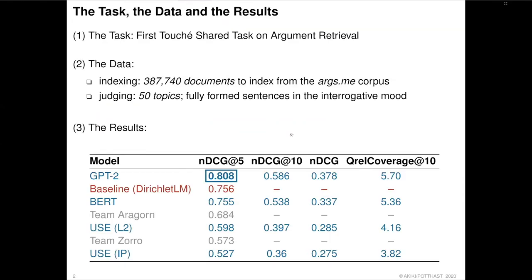I will start by re-providing the context to set the stage. The first shared task had us retrieve relevant arguments from a closed corpus of nearly 400,000 arguments. The evaluation itself was TREC-like, and therefore assessed against a set of 50 topics that consist of full sentences in the interrogative mood — things like 'Is climate change real?' or 'Should humans drink cow milk?'